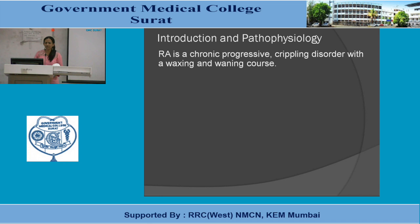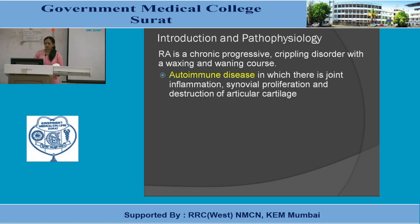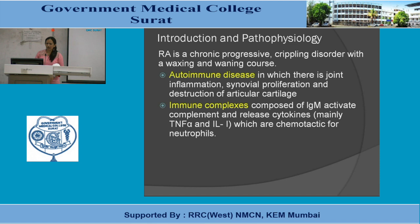RA is a chronic progressive crippling disorder with a waxing and waning course. It is an autoimmune disease with joint inflammation, synovial proliferation, and destruction of articular cartilage. Immune complexes composed of IgM activate complement and release cytokines, mainly TNF-alpha and interleukin-1, which are chemotactic for neutrophils.